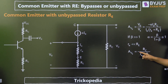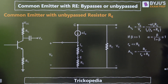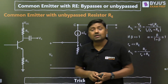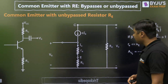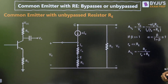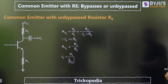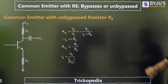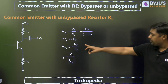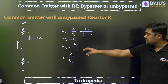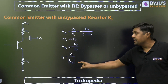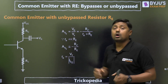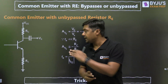Then the approximate formula will become minus RC divided by capital RE, and that magnitude is over-estimated. Now for the second diagram, if RE is present and RC is present, the approximate formula is minus RC divided by small re, where small re equals VT divided by IEQ, and IEQ is called the DC bias current.